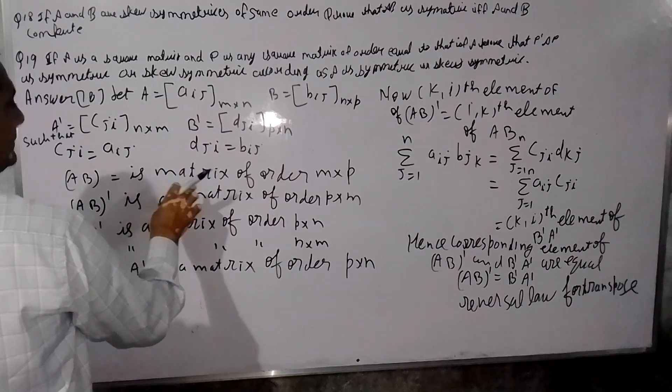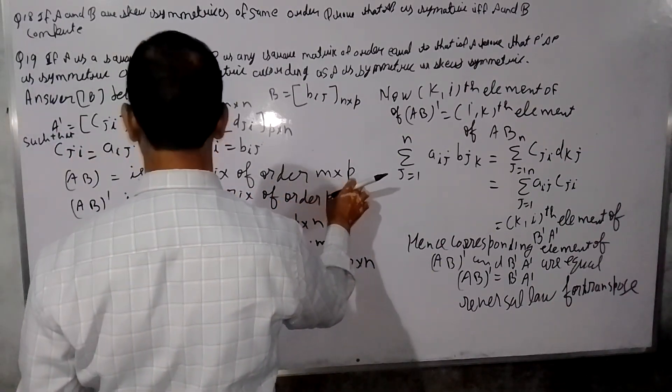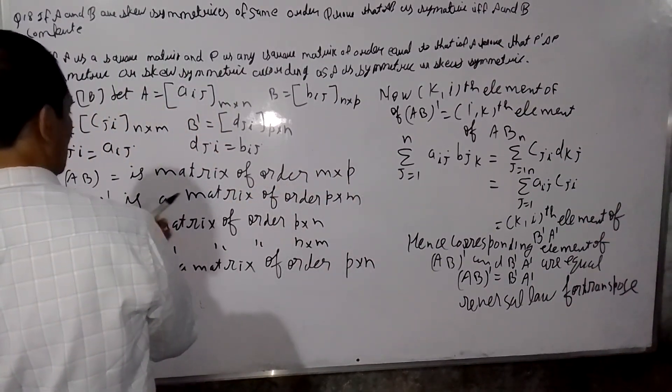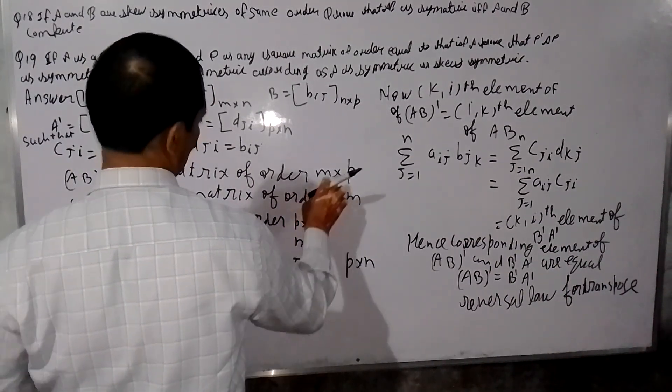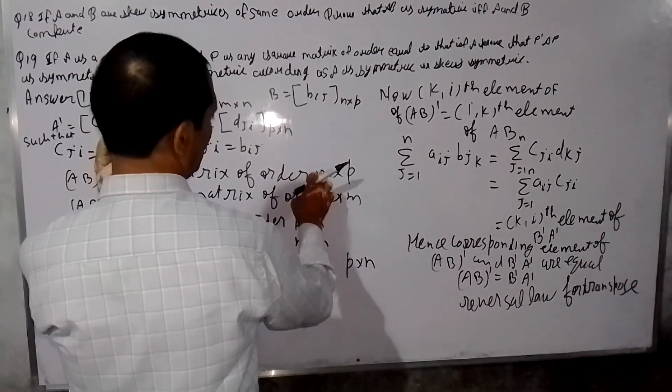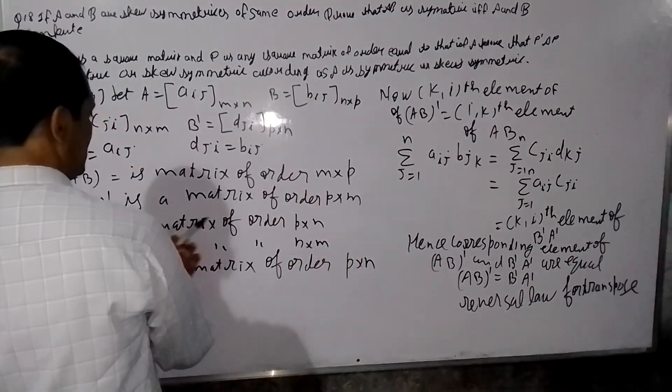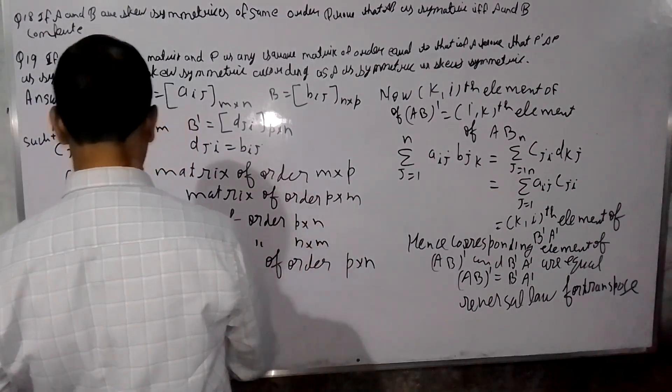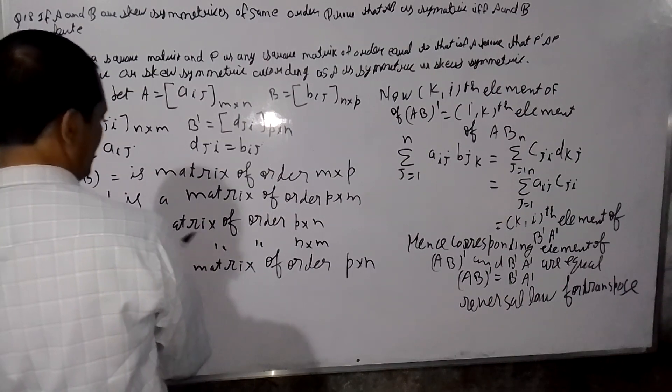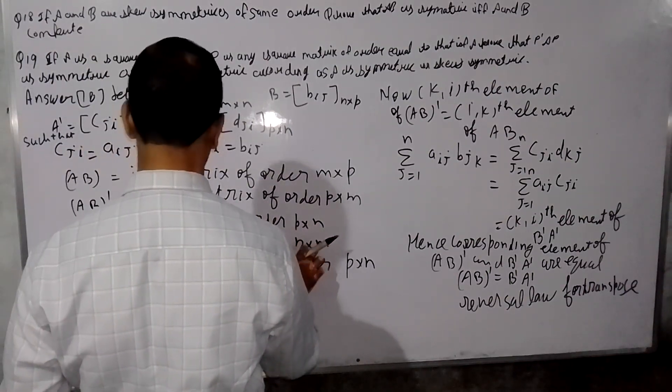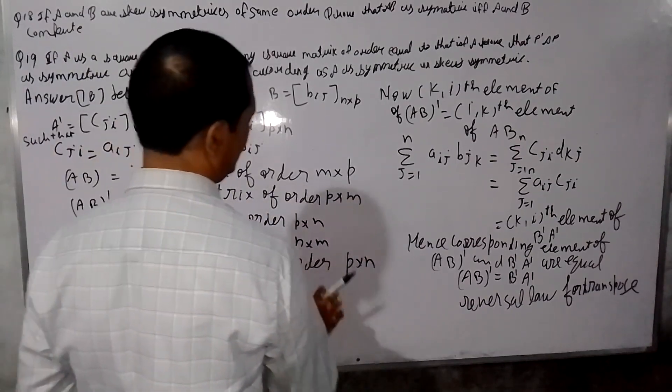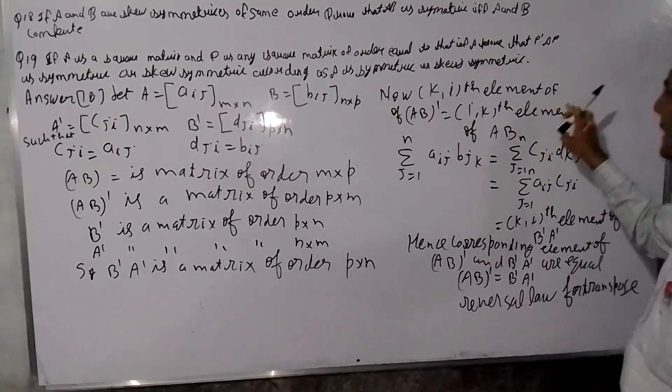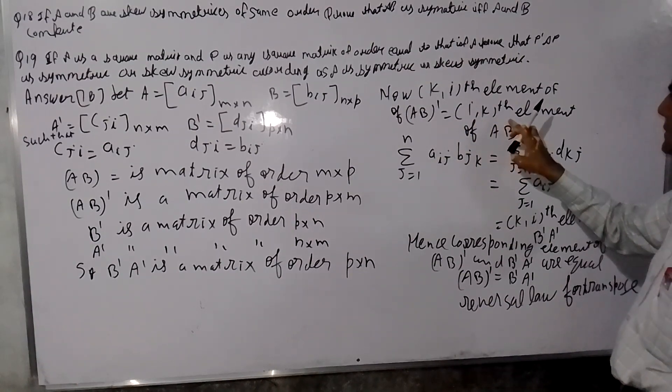AB is matrix of order 3 by B, C is matrix of order 3 by A, D. So D is matrix of order 3 by 3. Now here I get D is matrix of order 3 by K.